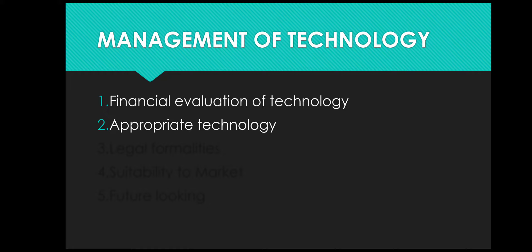For example, if you are importing technology from other countries and you don't know how to operate, maintain, or repair the machine, it will be very difficult. So initially, while adopting new technology, a contract regarding installation, maintenance, and repairs is to be made with the manufacturers or agencies who can help. Lastly, the workers must be adequately trained to handle the technology and can be deputed on training to learn its operation, maintenance, and repairs.